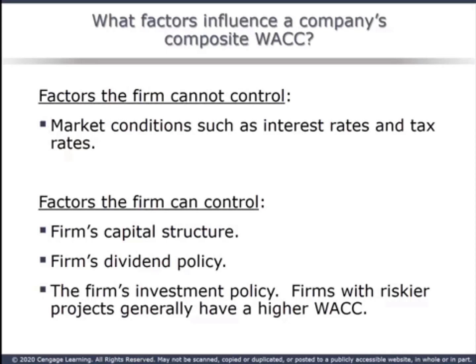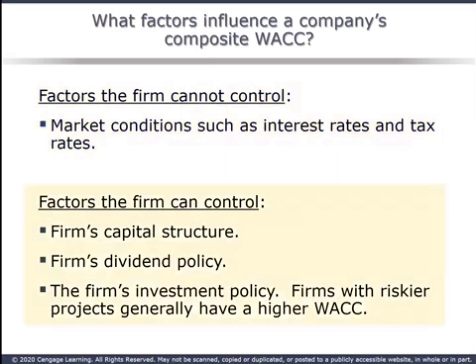How can a firm affect its cost of capital? A firm cannot control market conditions such as interest rates or tax rates. If interest rates rise, the cost of all components goes up. If tax rates rise, the cost of capital decreases. A firm can control its capital structure — how much of the firm is funded with debt versus equity. More debt and less equity brings the cost of capital down. A firm's dividend policy can affect its cost of capital, since paying out less means more retained earnings and less need to go outside for funding. A firm's investment policy affects the risk perceived by investors and their required return.